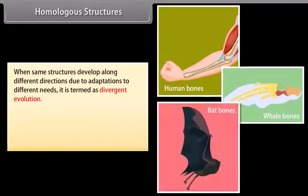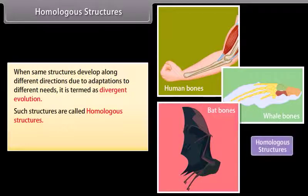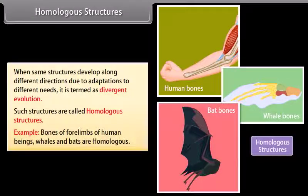Homologous structures. When same structures develop along different directions due to adaptations to different needs, it is termed as divergent evolution. Such structures are called homologous structures. Example: bones of forelimbs of human beings, whales and bats are homologous.